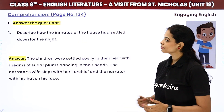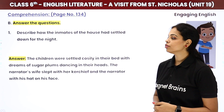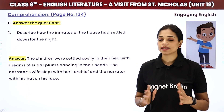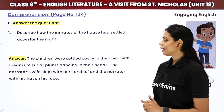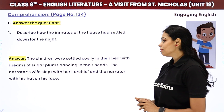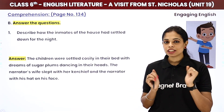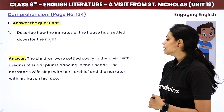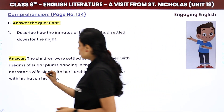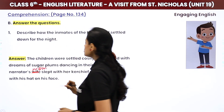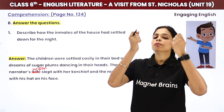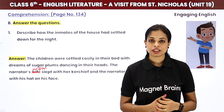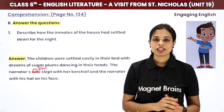Next question: Describe how the inmates of the house had settled down for the night. The children were settled cozily in their beds with dreams of sugar plums dancing in their heads. The narrator's mom slept with her kerchief — she put the cloth over her face, as is usually done so that light doesn't disturb sleep. And the narrator had his hat on his face.